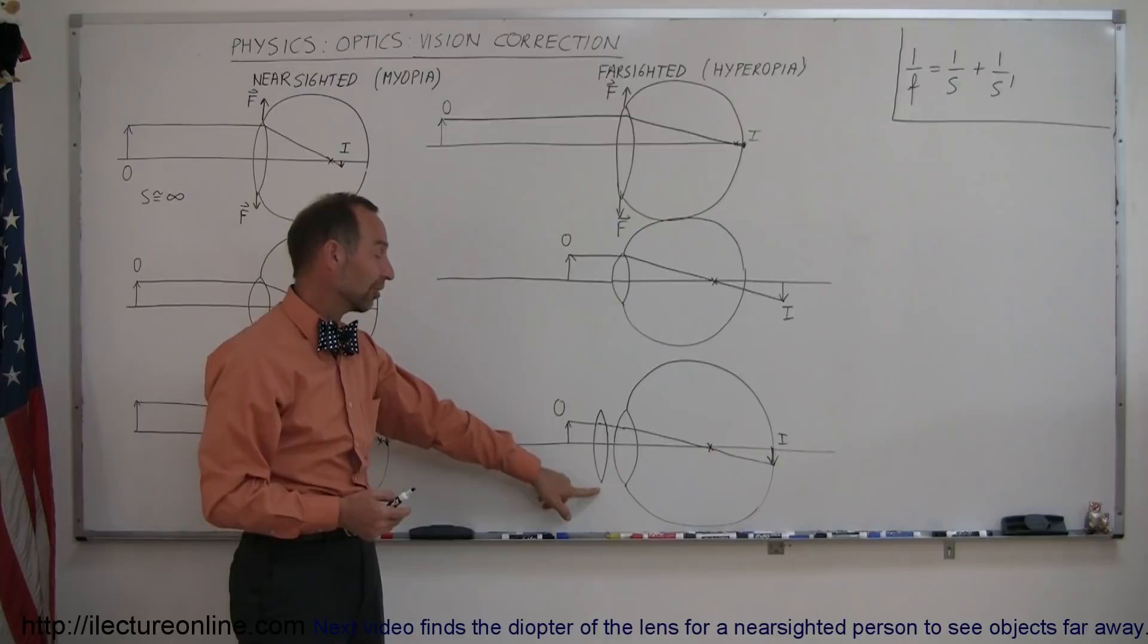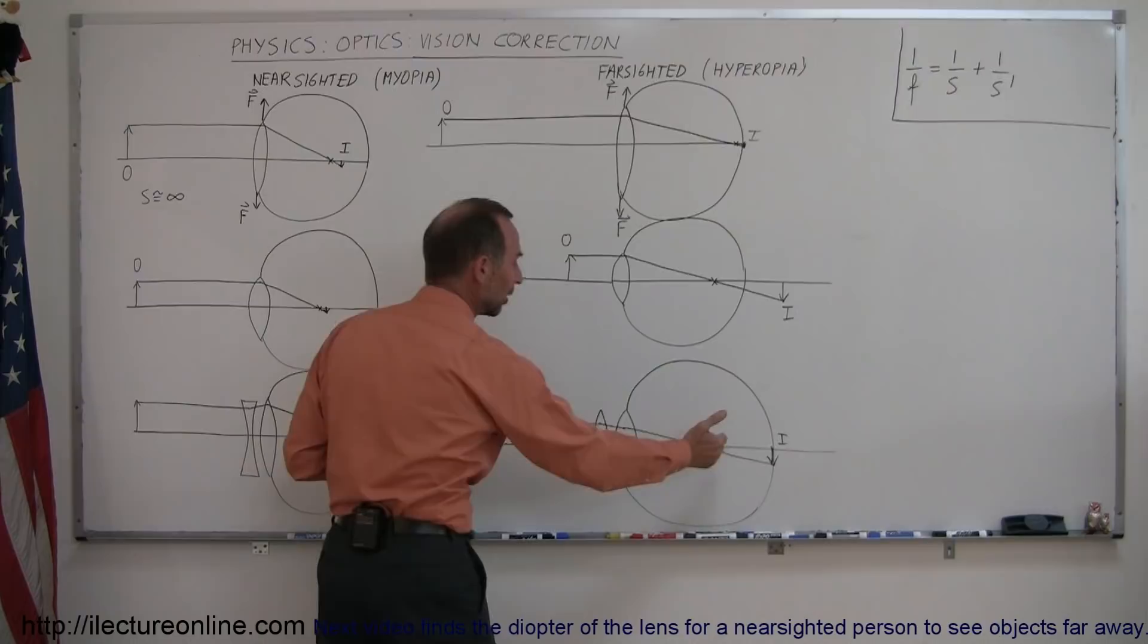These are then called reading glasses, lenses of reading glasses. They're converging lenses, it's kind of like a magnifying glass, it simply brings the image in closer and you can then see things clearly.